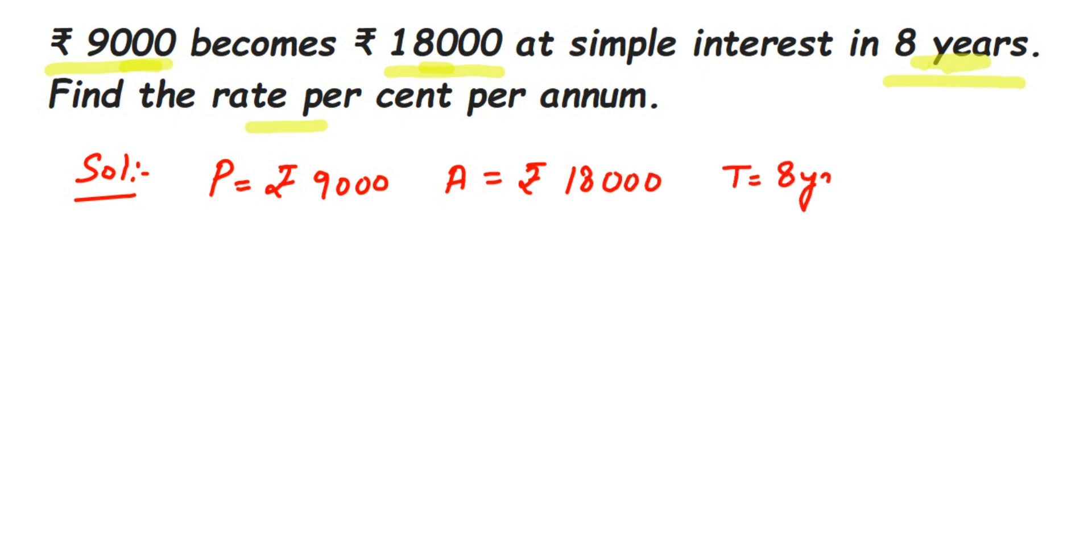We have to find out rate here. Now we're going to directly use a formula, but before we use this, we have to find out the simple interest. We know that simple interest is equal to amount minus principal. How much total amount we got? From there, if I remove the principal... principal is nothing but how much amount...